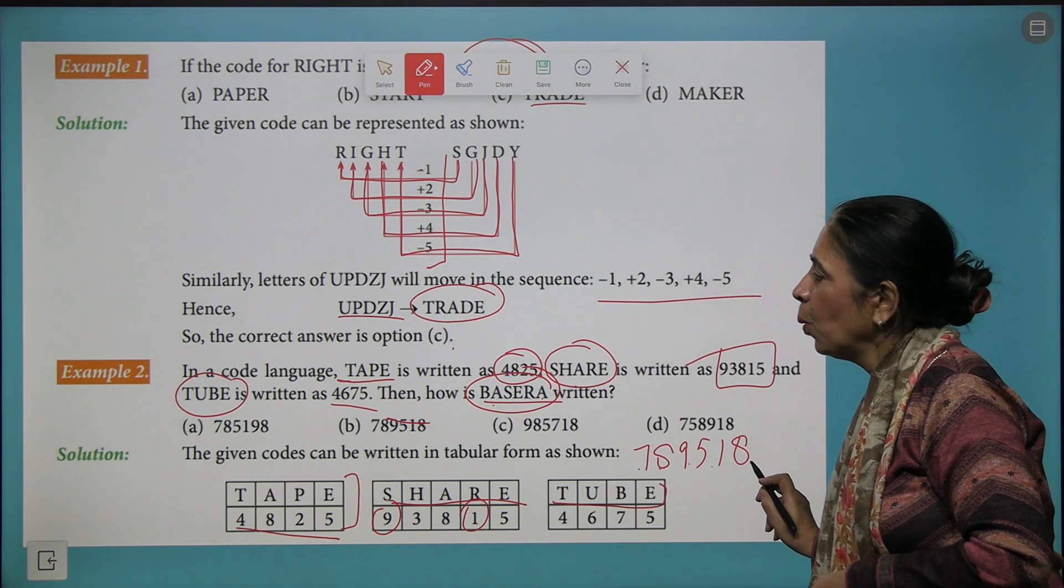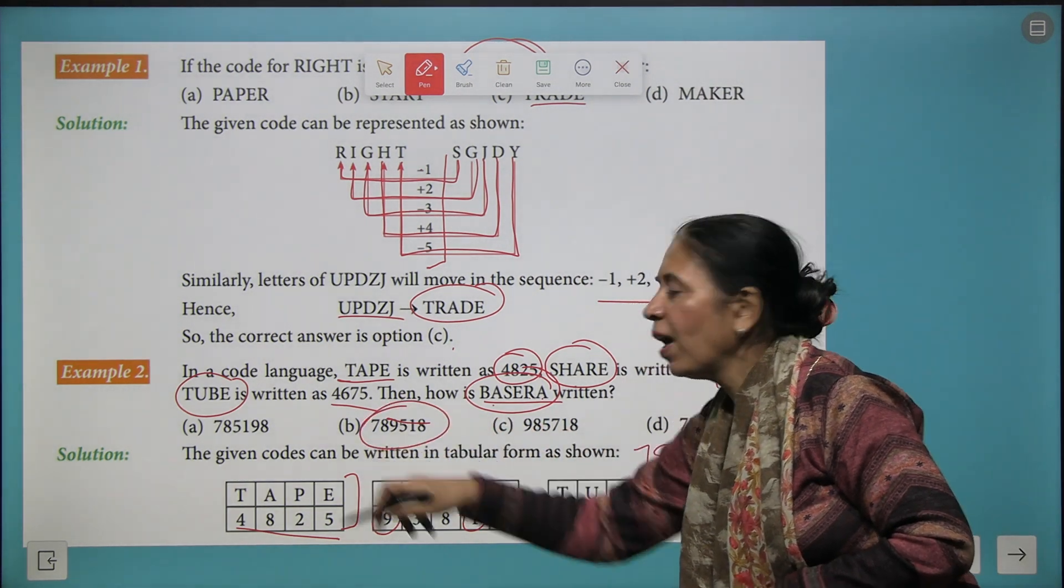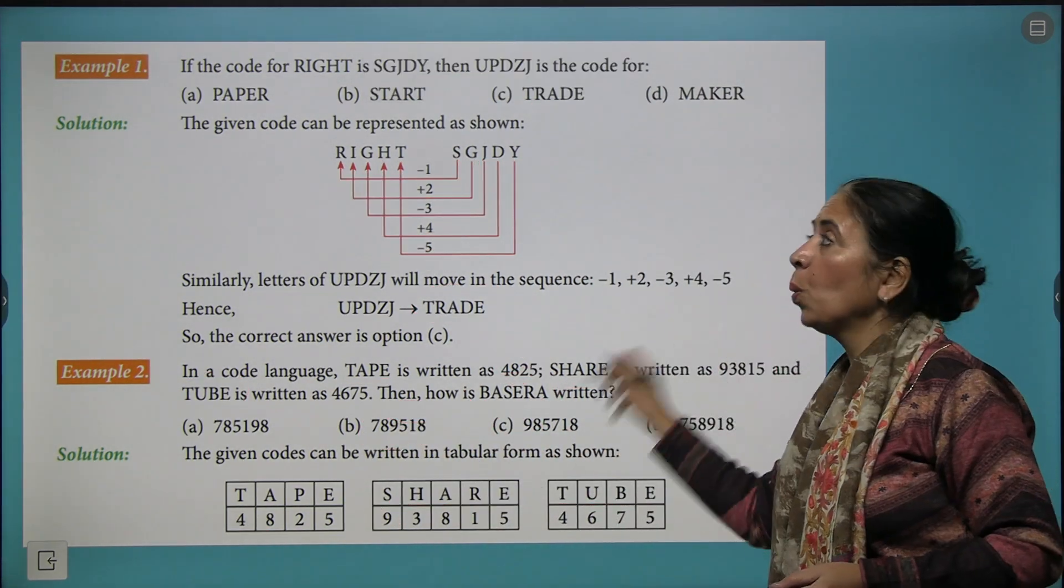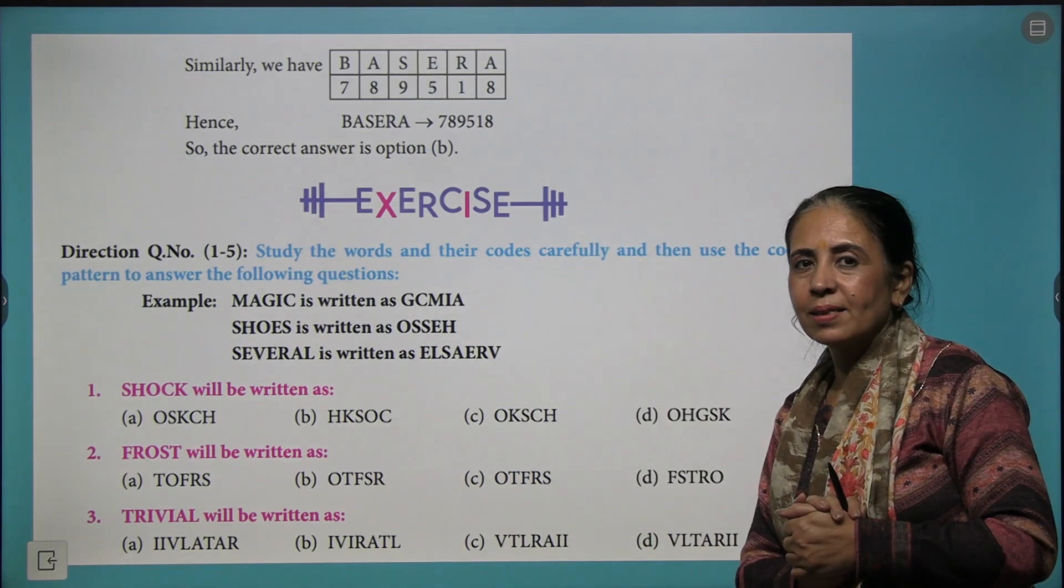So we have got 7, 8, 9, 5, 1, 8. Where is the answer? 789518 is here, so we say that B is the correct answer. Isn't it so thrilling?